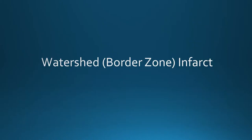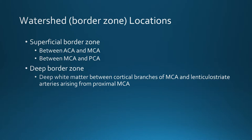This is a case of watershed or border zone infarction. To review the border zone locations: there is a superficial border zone between the cortical branches of the anterior and middle cerebral arteries, and between the cortical branches of the middle and posterior cerebral arteries. There is also a deep border zone involving the deep white matter, between the cortical branches of the MCA and the lenticulostriate arteries that arise from the proximal MCA. The lenticulostriate arteries go upward through the basal ganglia, and the deep border zone is in the region of the centrum semiovale.